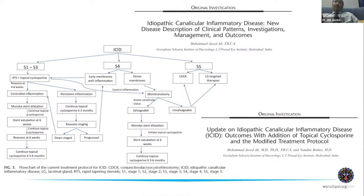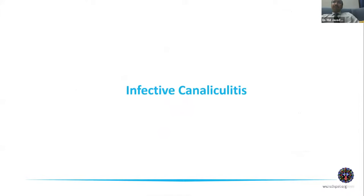Initially we were not able to manage ICID effectively. When we found that certain T cell subsets are involved, we started placing patients on topical cyclosporine, and at least half of the patients can now be downstaged and helped with other modalities. These papers discuss the protocols of management for different stages of ICID and how to go about managing them.